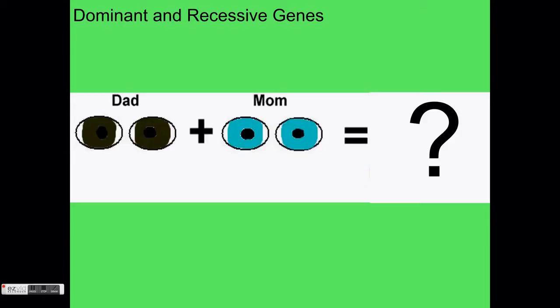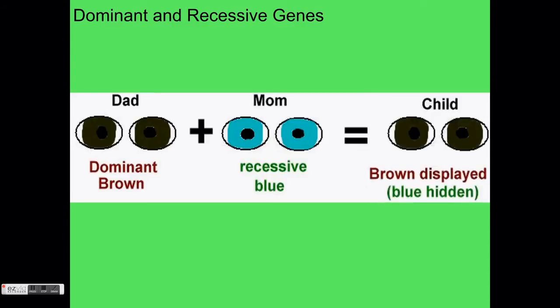It turns out that some versions of a gene will cover up or mask the other in the pair when it is present. A gene that masks or covers up the other gene in the pair is called a dominant allele. A recessive allele is the one that gets masked or covered up when the dominant allele is present. In the example above, brown eyes are dominant and blue eyes are recessive. This means that the child will certainly have brown eyes because even though both genes are present, the brown gene is dominant so it will cover up the blue gene.